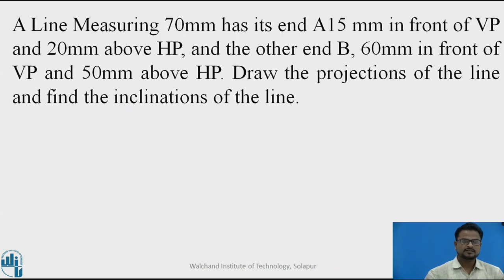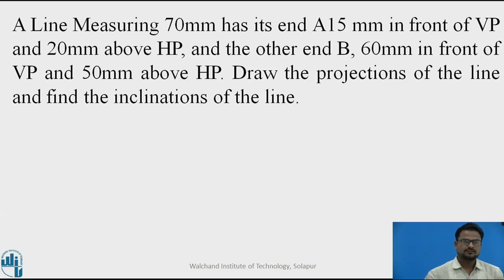This is the simple problem I am going to take. A line measuring 70 mm has its end A, 15 mm in front of VP and 20 mm above HP, and the other end B, 60 mm in front of VP and 50 mm above HP. Draw the projections of the line and find out the inclination of the line.